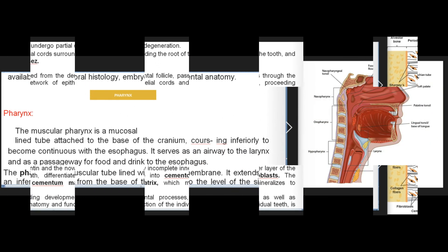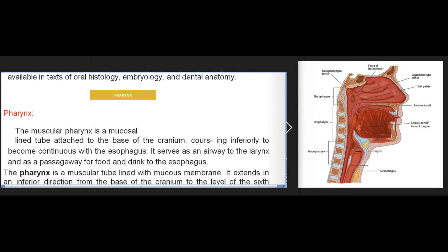Detailed information regarding developmental processes as well as information on the complex anatomy and function of the individual teeth is available in texts of oral histology, embryology, and dental anatomy. The muscular pharynx is a mucosally lined tube attached to the base of the cranium, coursing inferiorly to become continuous with the esophagus. It serves as an airway to the larynx and as a passageway for food and drink to the esophagus.